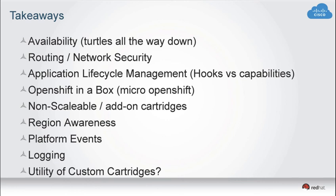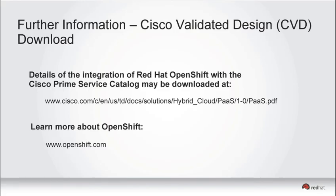One other thing before handing off to Dan: the integration work we did in Cisco IT was transferred to our Systems Development Unit, which creates validated designs for integrated systems. There's a Cisco Validated Design from SDU that integrates Red Hat OpenShift with Cisco Prime Service Catalog and deploys it on Cisco hardware with Red Hat OpenStack. That's downloadable from cisco.com.